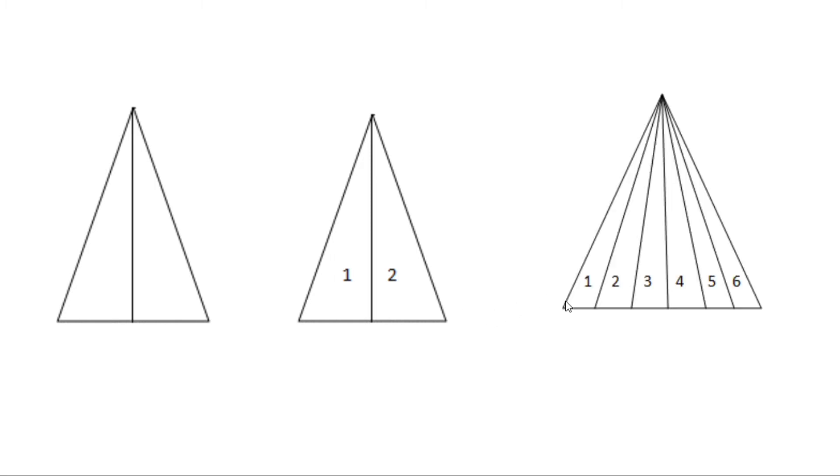Now let's look at this complex triangle. Let's look at the base first. We know that all the lines start from the vertex, so let's start to count. Here we have one, two, three, four, five, and six.